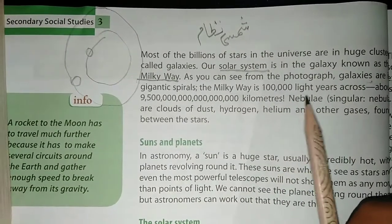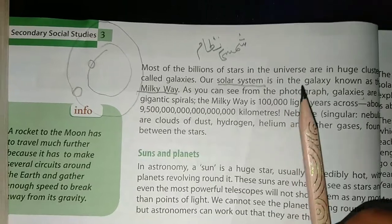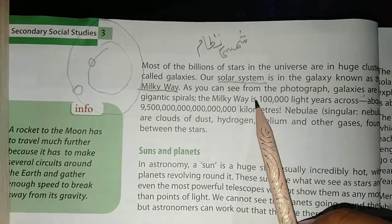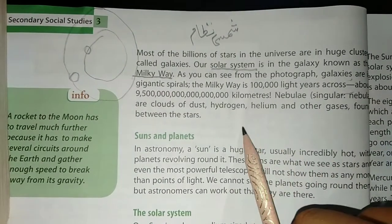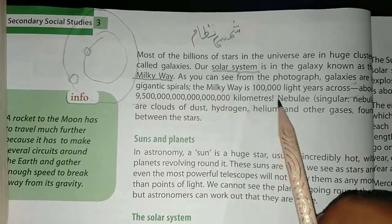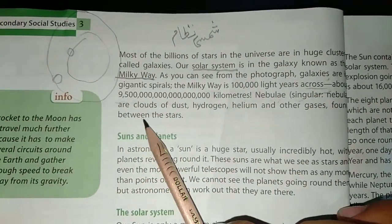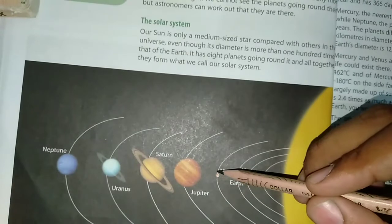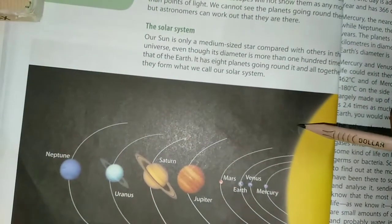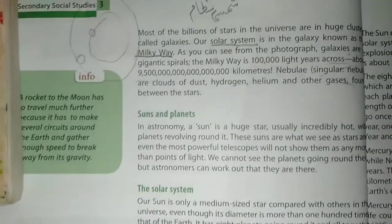The Milky Way is 100,000 light years across. In space, the distances are huge, so astronomers and scientists use light years to measure distances. There are about 1,000 nebulae, which are clouds of dust, hydrogen, helium, and other gases.